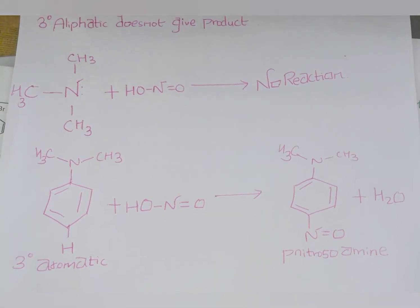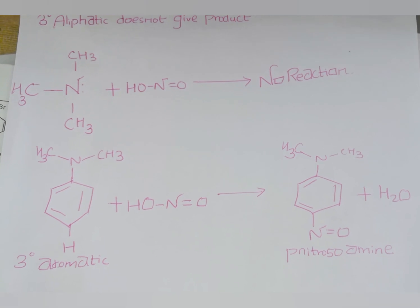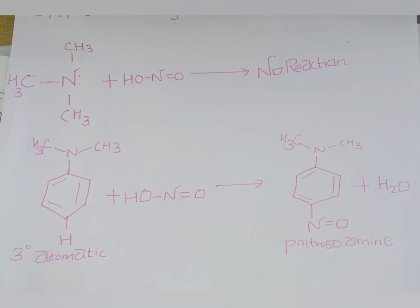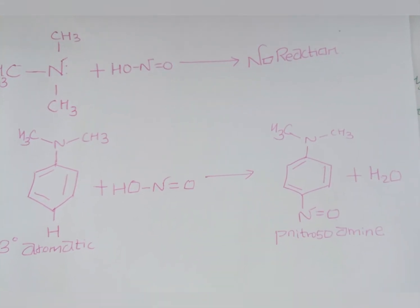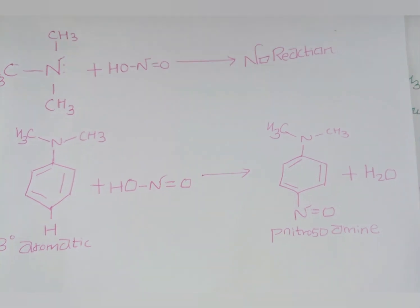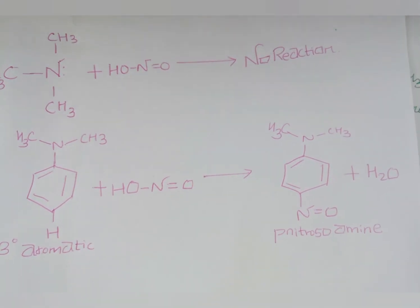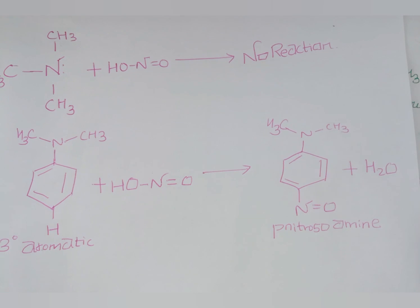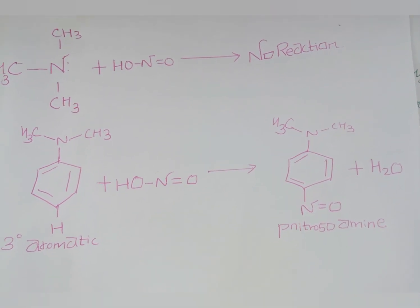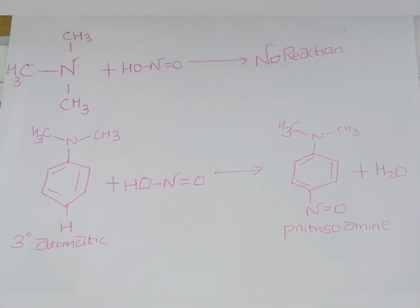Whereas, when it reacts with tertiary aromatic compounds, it forms a paranitrosoamine. Therefore, we conclude that tertiary aromatic amines react with nitrous acid to form ring substituted product.